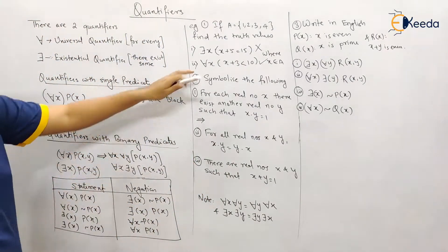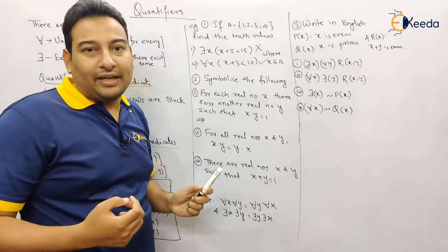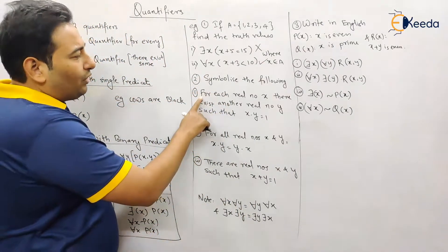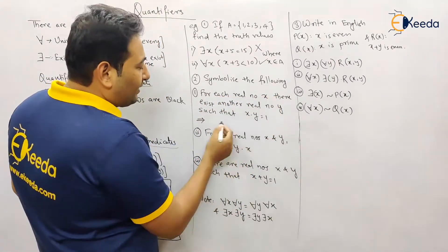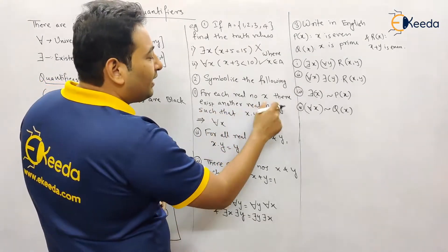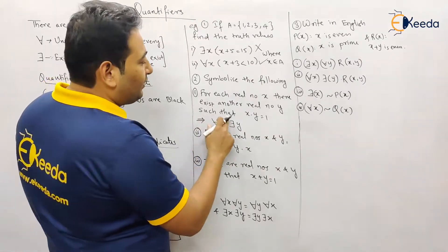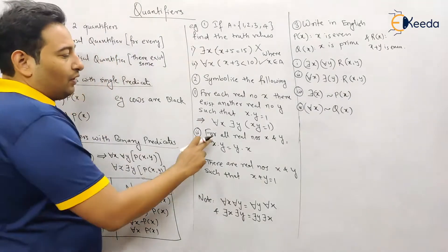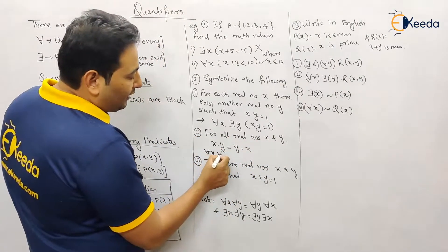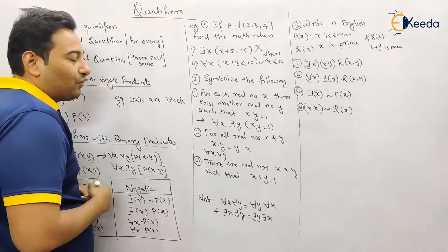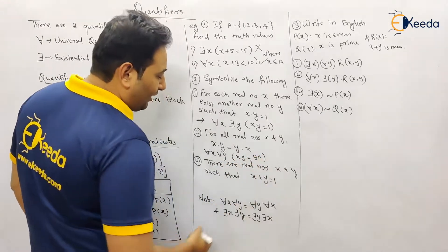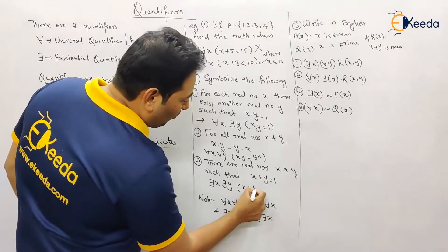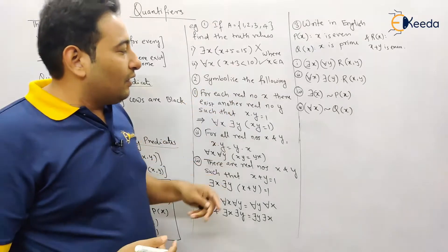The previous problem was based on a single predicate with one condition on x. This next example is a binary predicate because the restriction is on both x and y. We need to write statements in symbolic form: 'for each real number x, there exists a real number y such that x·y = 1' is written as ∀x ∃y P(x, y). 'For all real numbers x and y' means ∀x ∀y, x·y = y·x.